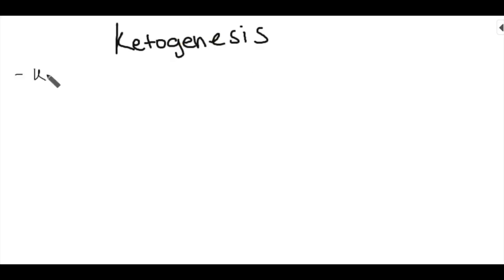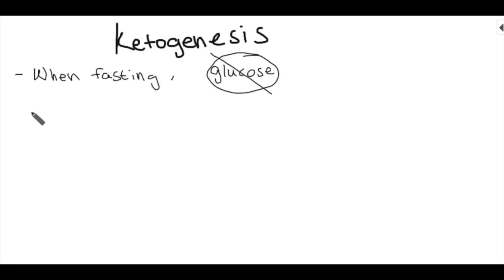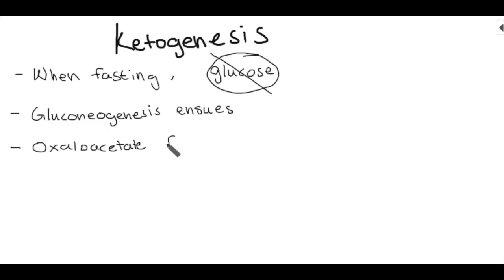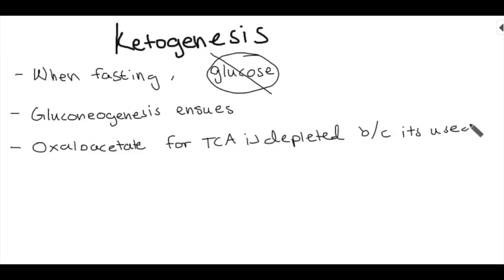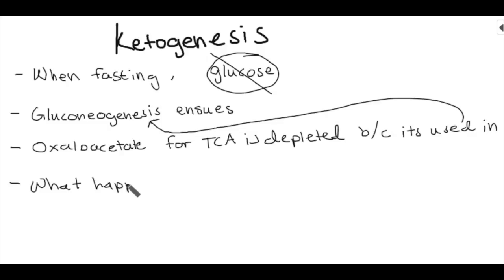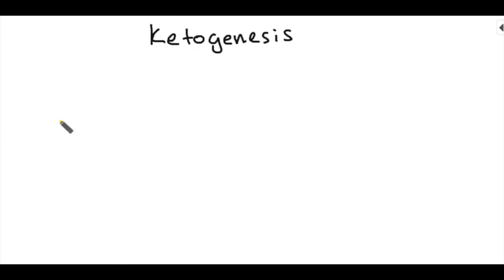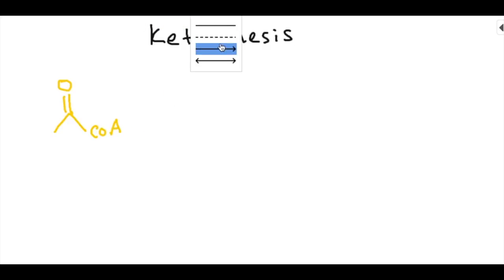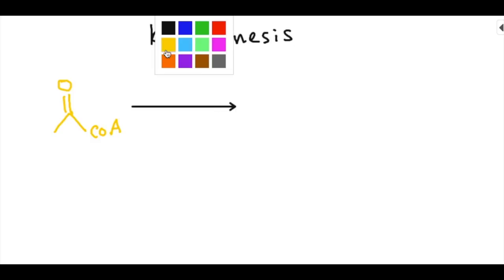Next we'll talk about ketogenesis. When fasting, glucose isn't taken up into cells — this happens in diabetes where insulin isn't facilitating glucose uptake, or simply because you're not eating. Gluconeogenesis occurs, making new glucose from non-glucose substrates, and oxaloacetate — normally used for the TCA cycle — gets depleted for gluconeogenesis. Without TCA cycle function, the cell must do something with the acetyl-CoA from beta oxidation.